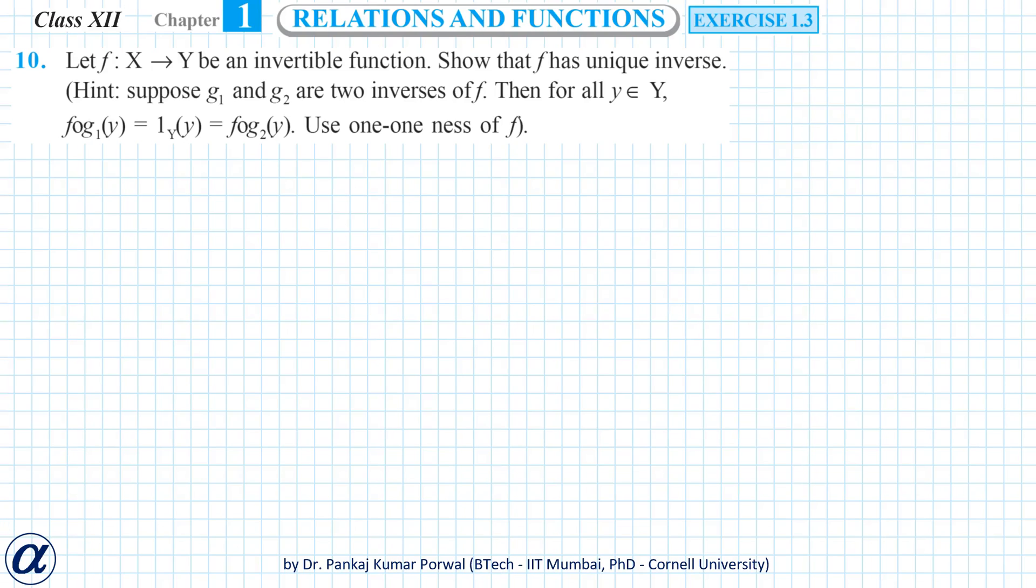In this question we are given that a function f from x to y is invertible and we have to show that f has unique inverse. We are also given hint that suppose g1 and g2 are two inverses of f.